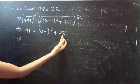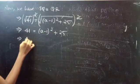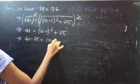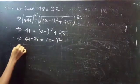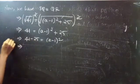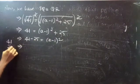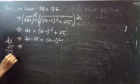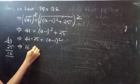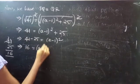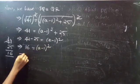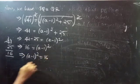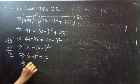So this implies: take 25 to the left-hand side. 41 minus 25 equals (A−1)². So 16 = (A−1)², or (A−1)² = 16. This implies A−1 = ±4.